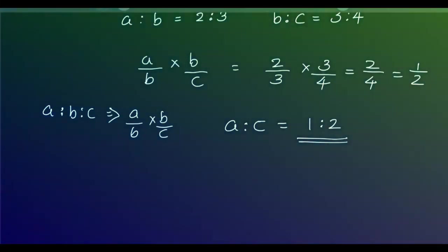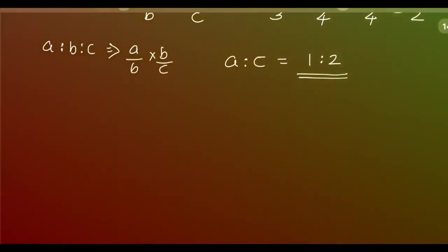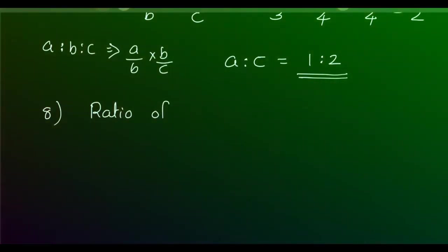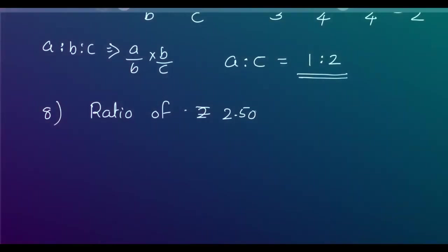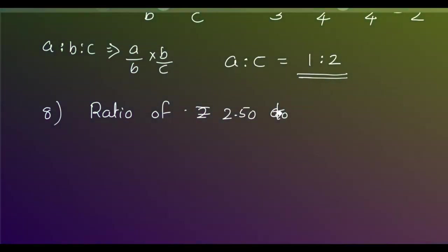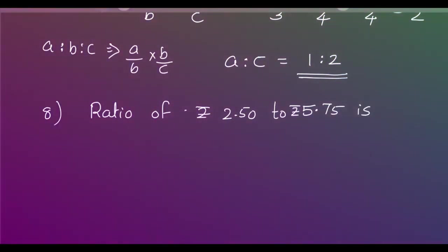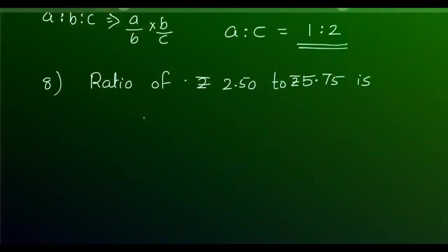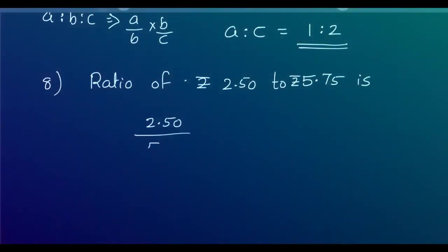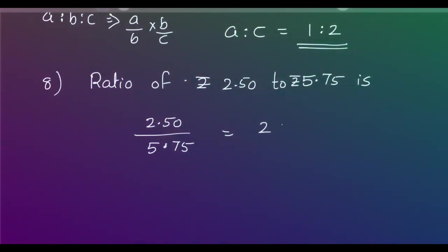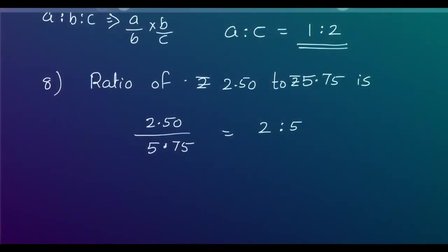The eighth question: find the ratio of Rs. 2.50 to Rs. 5.75. Ratio means simply division — 2.50 by 5.75. We can simply neglect the decimal point and rewrite the ratio as 2 is to 5.